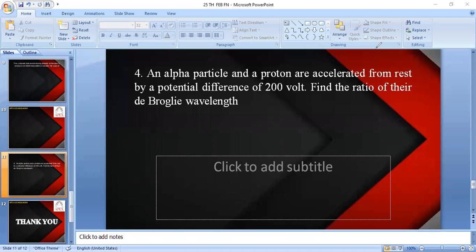An alpha particle and a proton are accelerated from rest by a potential difference of 200 volt. Find the ratio of the De Broglie wavelength. This is a simple question based on the formula for De Broglie wavelength.